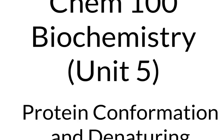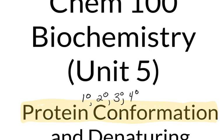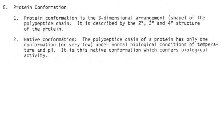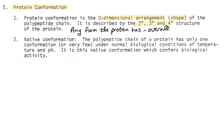We previously discussed the four levels of protein conformation: primary structure, secondary structure, tertiary structure, and quaternary structure. Now we're going to talk about what that means in nature and what happens when we denature that. Protein conformation is the three-dimensional arrangement or shape of a polypeptide chain, described by secondary, tertiary, and quaternary structure. The protein conformation is the overall shape, whether it's the normal natural shape or a different shape — it is just called the protein conformation.